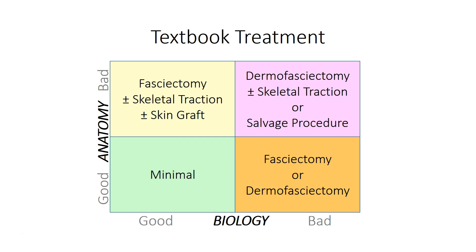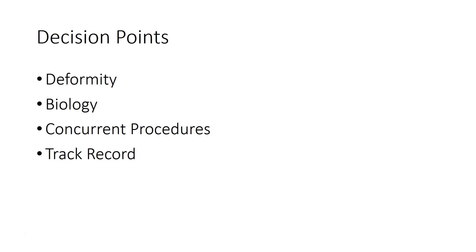Textbook treatment is based on similar concepts. If someone has a minimal contracture and minimal biology, they can have a minimal procedure and ought to do fairly well. If they have a more severe contracture but good biology, we have well-established technical approaches to deal with that. If someone has aggressive biology, we start performing more radical and destructive surgery in an effort to control the biology surgically — which really doesn't work that well. Our current decision points are based on the deformity, our assessment of biology, whether we're doing additional procedures, and the patient's track record of prior treatment.